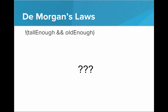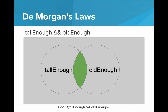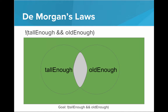Now the question is: how can we represent NOT (tall enough AND old enough)? Remember that tall enough AND old enough is the intersection. So we want the opposite of that — the negation. Everything that was green becomes gray and everything that was gray becomes green. This is all the people in the world who are NOT (tall enough AND old enough) — they cannot ride the ride.